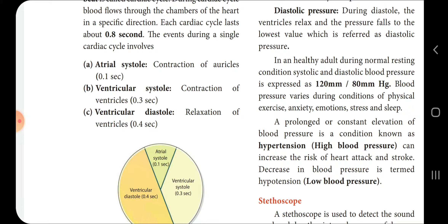Define blood pressure. Blood pressure is the force exerted during blood flow against the lateral wall of the arteries. Define pulse: when the heartbeat forces blood into the arteries, the expansion of the artery each time blood is forced in is called the pulse. The normal pulse rate is 70 to 90.